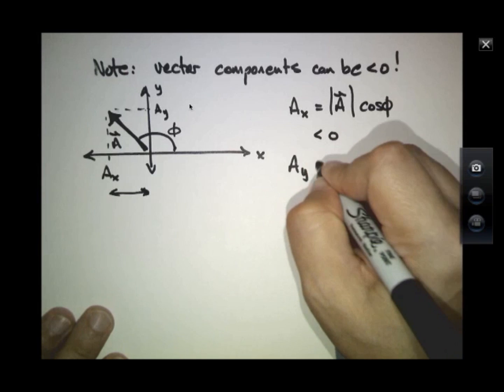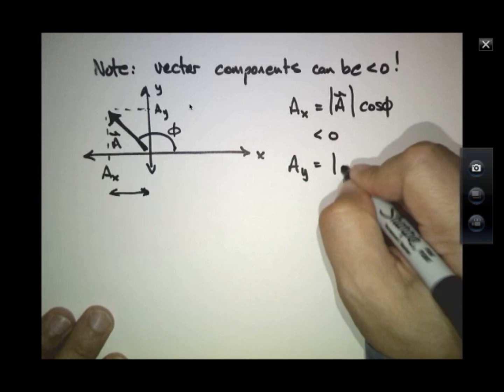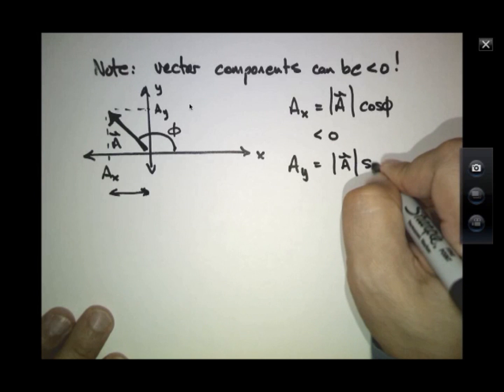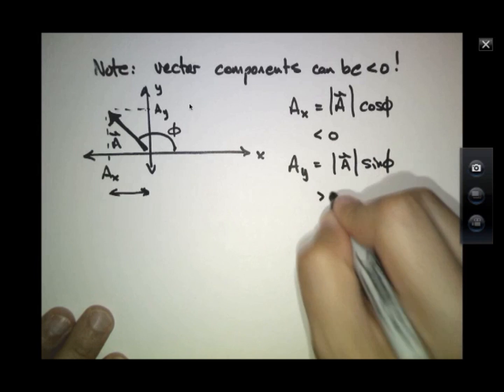In this case, AY, which is A times the sine of phi, would be greater than zero.